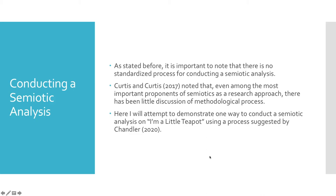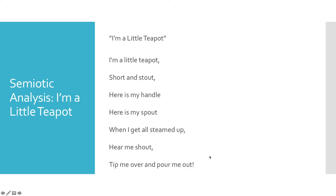Now that I've explained some of the details associated with the approach, let's look at it in action. As stated before, there is no agreed upon set of steps in conducting this type of analysis. I'm going to use a three-step procedure recommended by Chandler to analyze the familiar nursery rhyme, 'I'm a Little Teapot.' Here's the text of the familiar nursery rhyme. If you're like me, you've repeated these lines countless times without really examining the potential meaning of the rhyme. If we look more closely at the signs — in this example, the words that are used and the meanings they evoke — we can see it through a deeper, different lens.